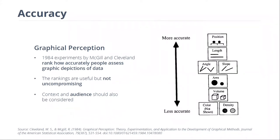But when we get into things like angles, area, and volume, it's a little bit harder — people are less accurate in their understanding of those representations of data. These rankings can be useful when we want to create accurate visualizations, but keep in mind they're not set in stone. It doesn't mean we can never use area or color — it just means we should use this as a guide.